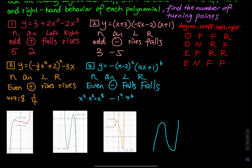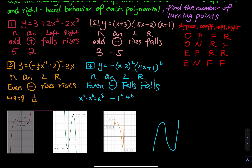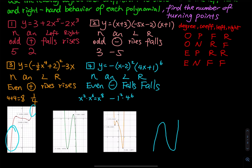I have some graphs here to verify my answers. Looking at the first graph, which corresponds to the first function, we have falls to the left and rises to the right — that is correct. The next graph corresponds to number 2: rise to the left and falls to the right — that is correct as well.